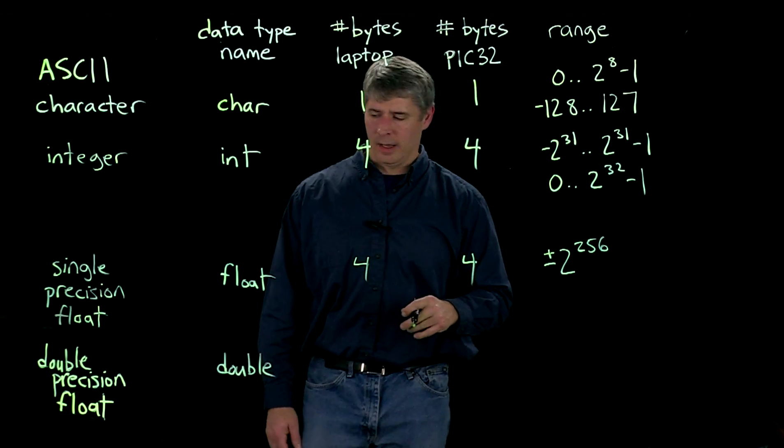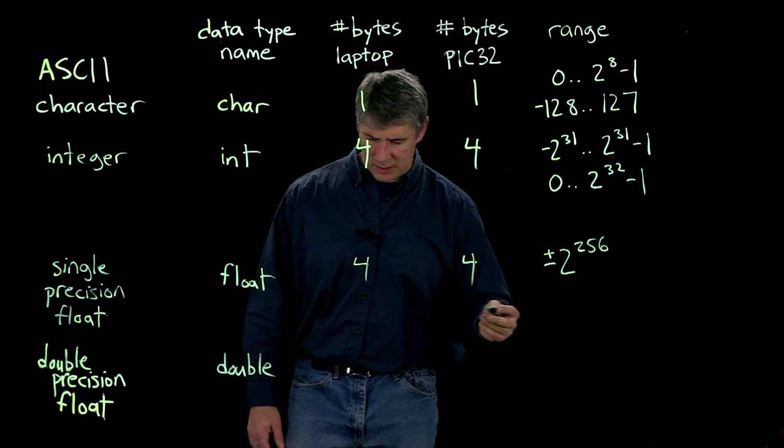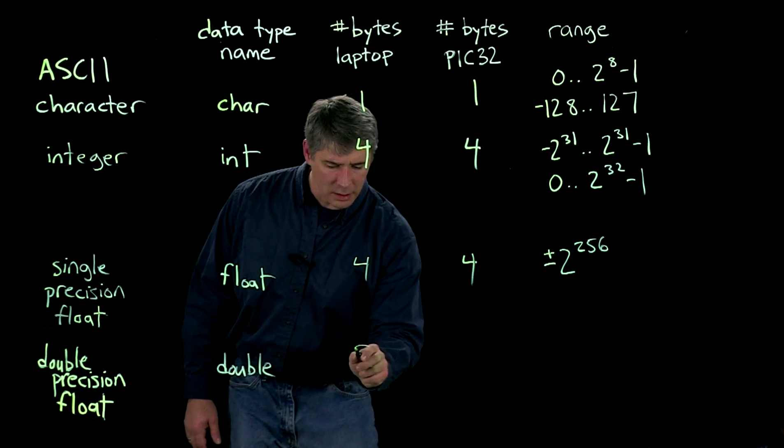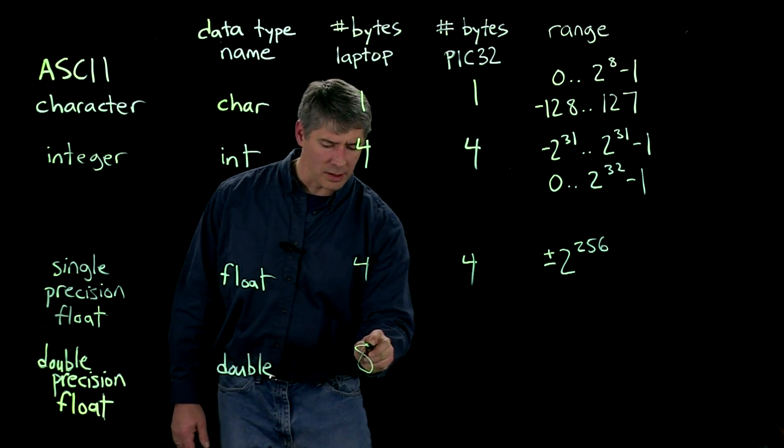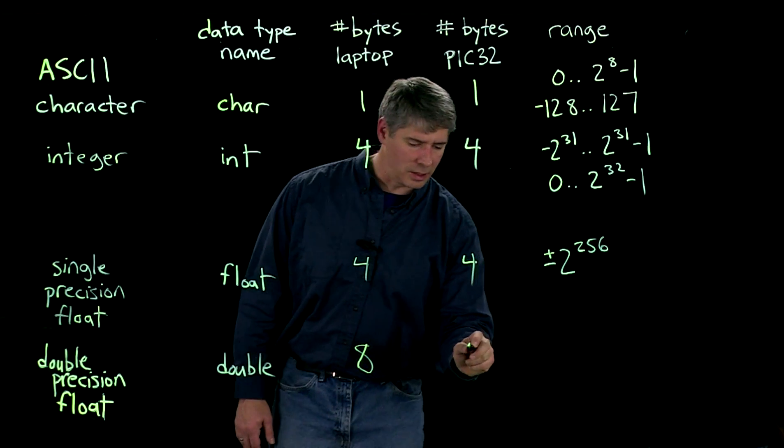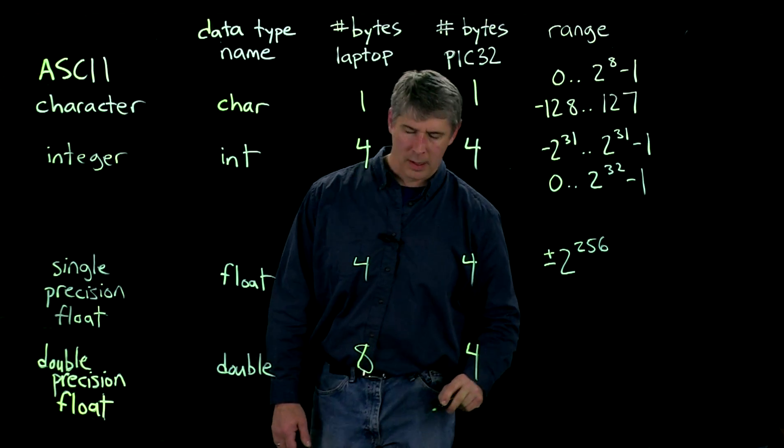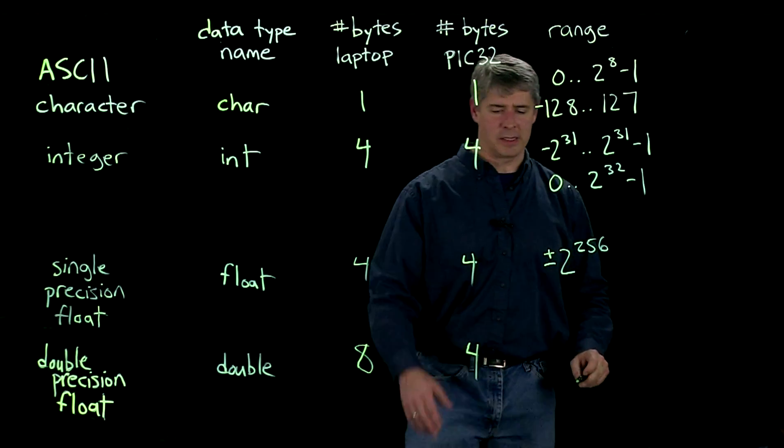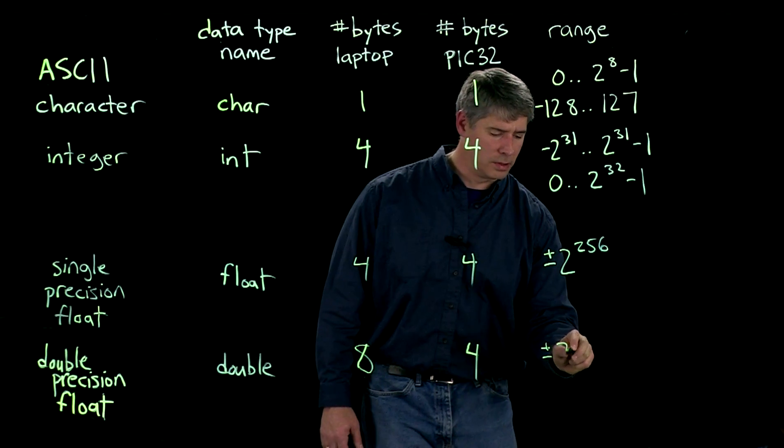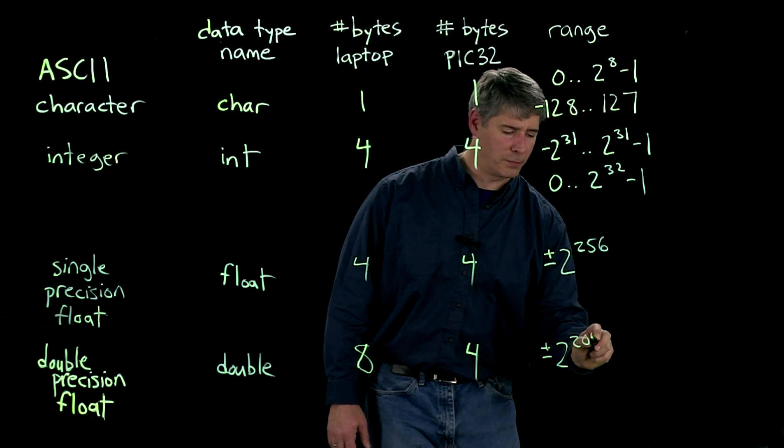And, finally, double-precision floating-point numbers often use 8 bytes. It turns out on the PIC32, double-precision is also 4. But, if you had 8 bytes, then you could represent numbers up to 2 to the 2048. So, truly giant numbers.